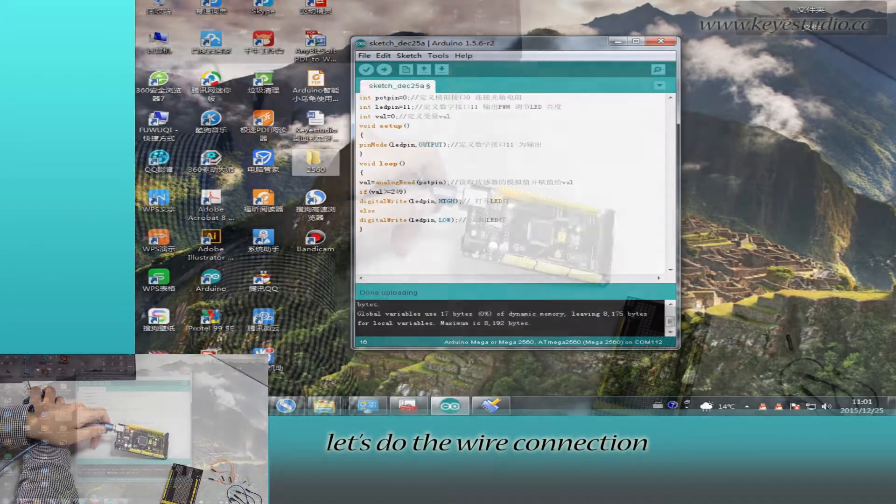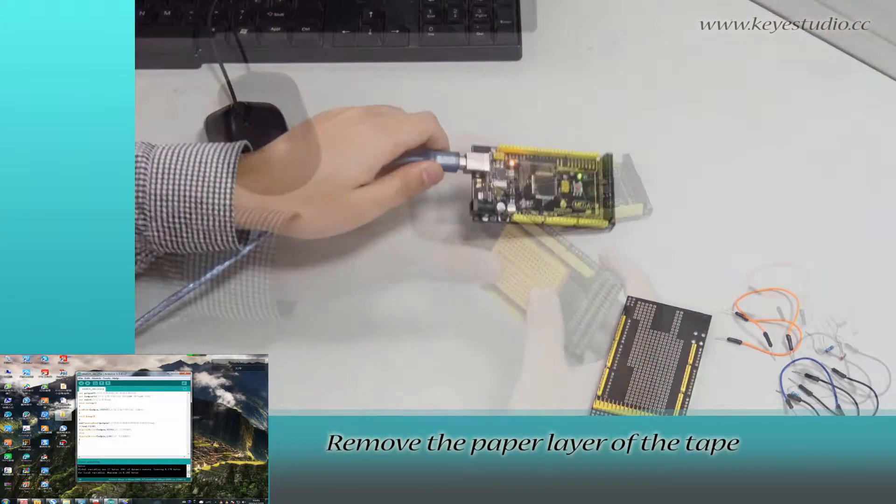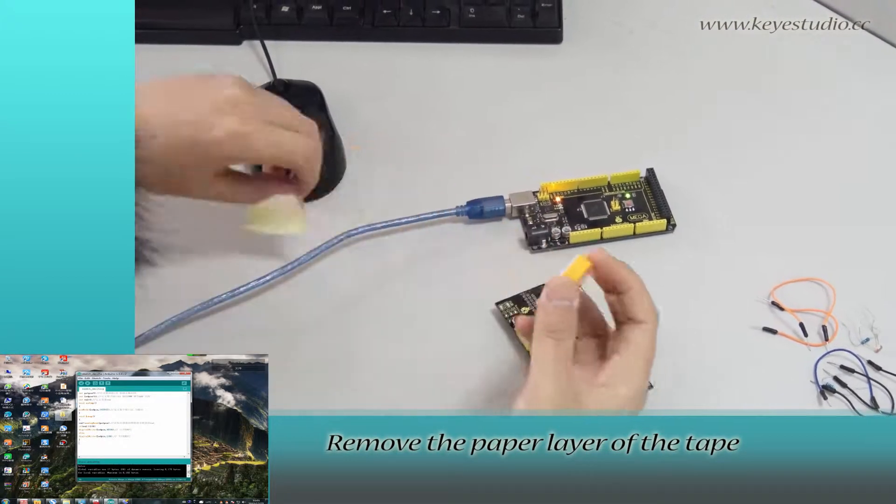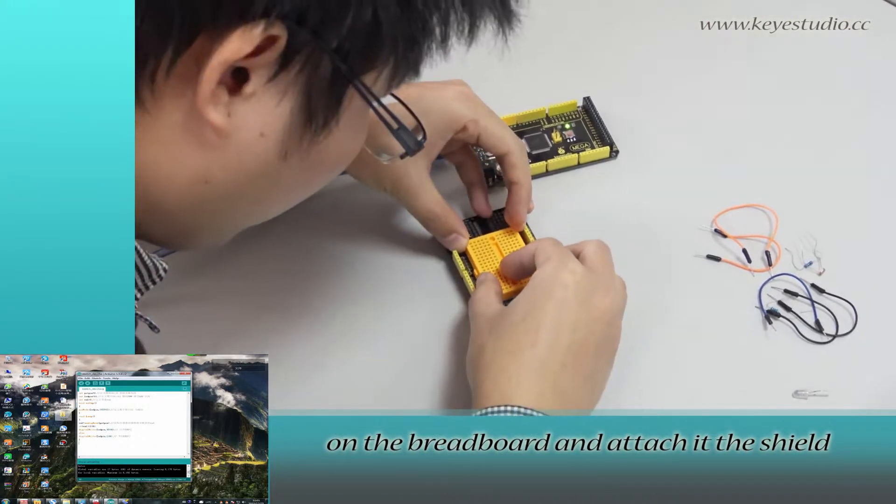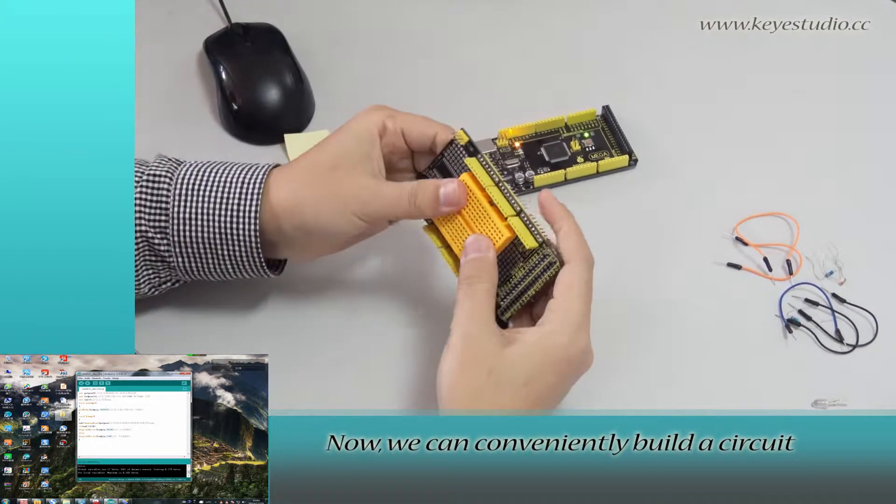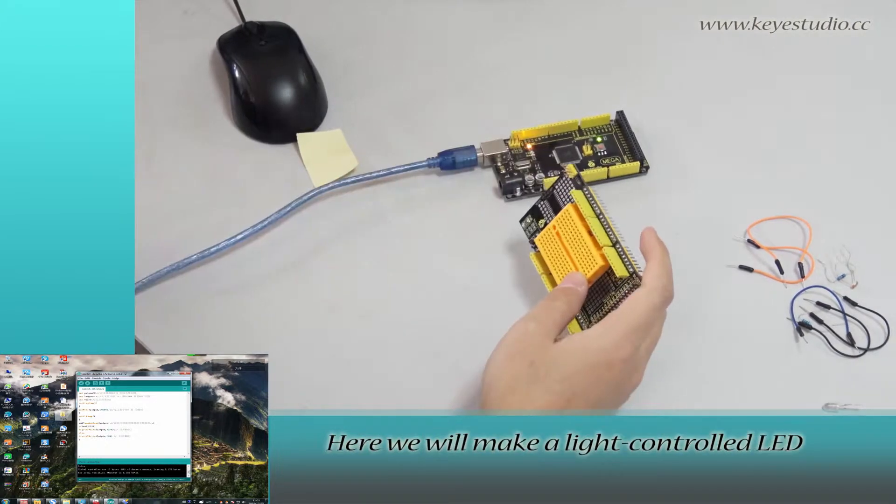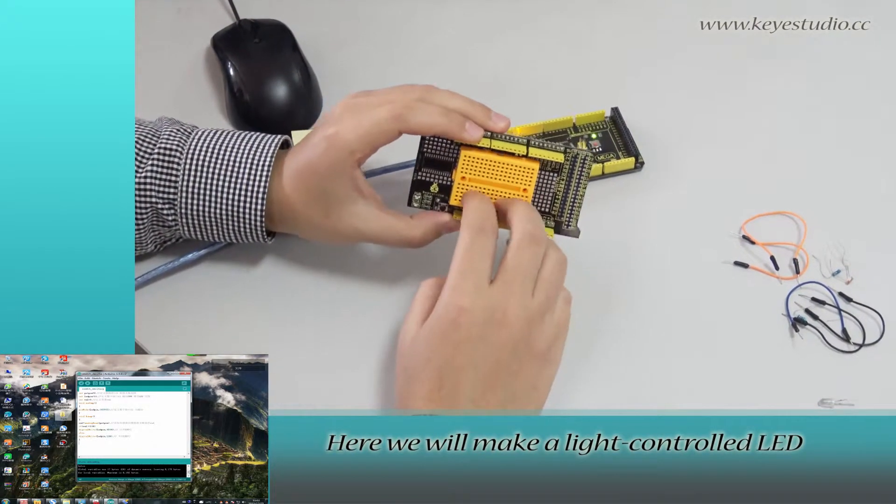After uploading is done, let's do the wire connection. Remove the paper layer of the tape on the breadboard and attach it to the shield. Now, we can conveniently build a circuit. Here, we will make a light-controlled LED.